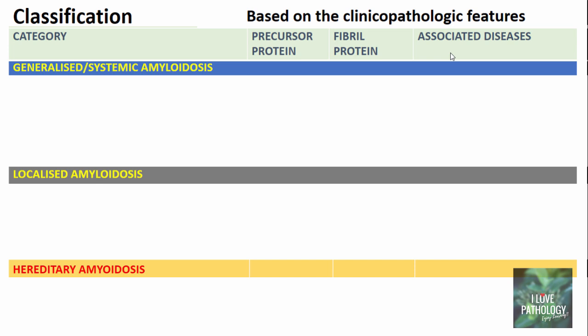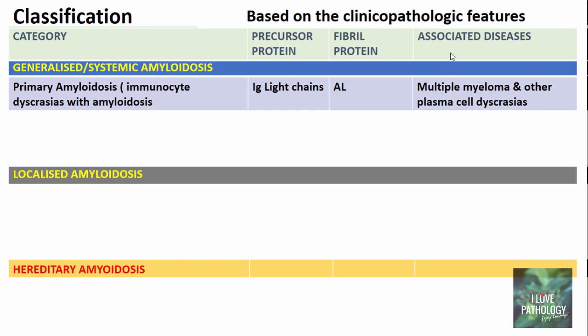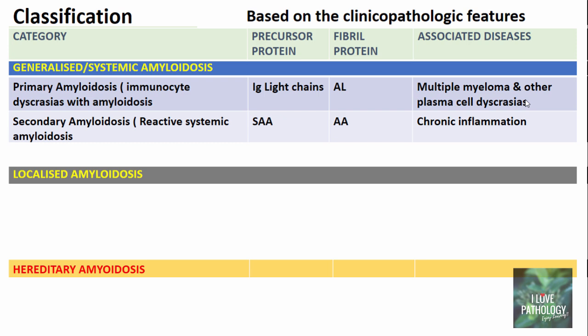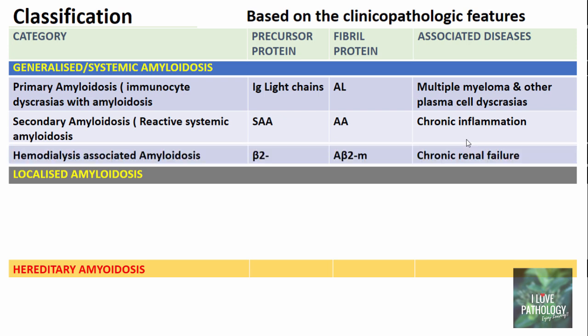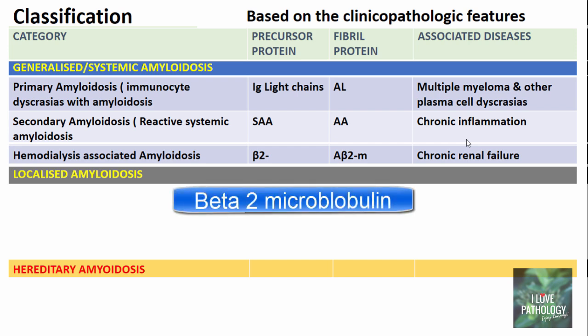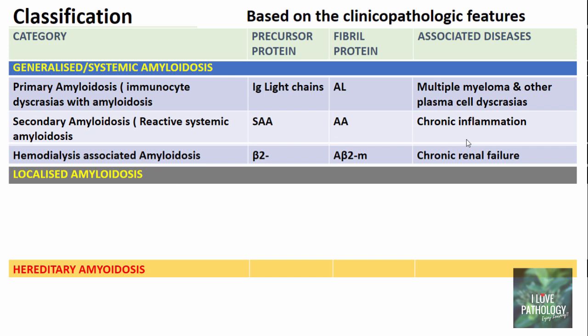In generalized amyloidosis, the first subcategory is primary amyloidosis, associated with immunocyte dyscrasias. The precursor proteins are immunoglobulin light chains, the fibrillar protein is AL type, and associated diseases include multiple myeloma and other plasma cell dyscrasias. The second is secondary amyloidosis, also called reactive systemic amyloidosis, secondary to chronic inflammation. The precursor protein is serum amyloid associated protein, the fibrillar protein is AA. The third is hemodialysis-associated amyloidosis, where the precursor protein is beta-2 microglobulin, the fibrillar protein is A-beta-2-microglobulin, and the associated disease is chronic renal failure.